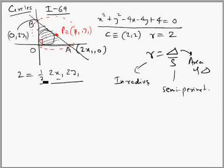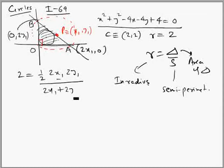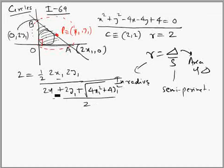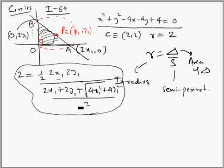Divided by the semi-perimeter: the semi-perimeter is (OA + OB + AB) / 2 = (2x1 + 2y1 + √(4x1² + 4y1²)) / 2. We apply the formula R = Δ/s, where R is the inradius, Δ is the area, and s is the semi-perimeter. There is no changing parameter to eliminate — this is directly the locus. We just simplify to get the locus.